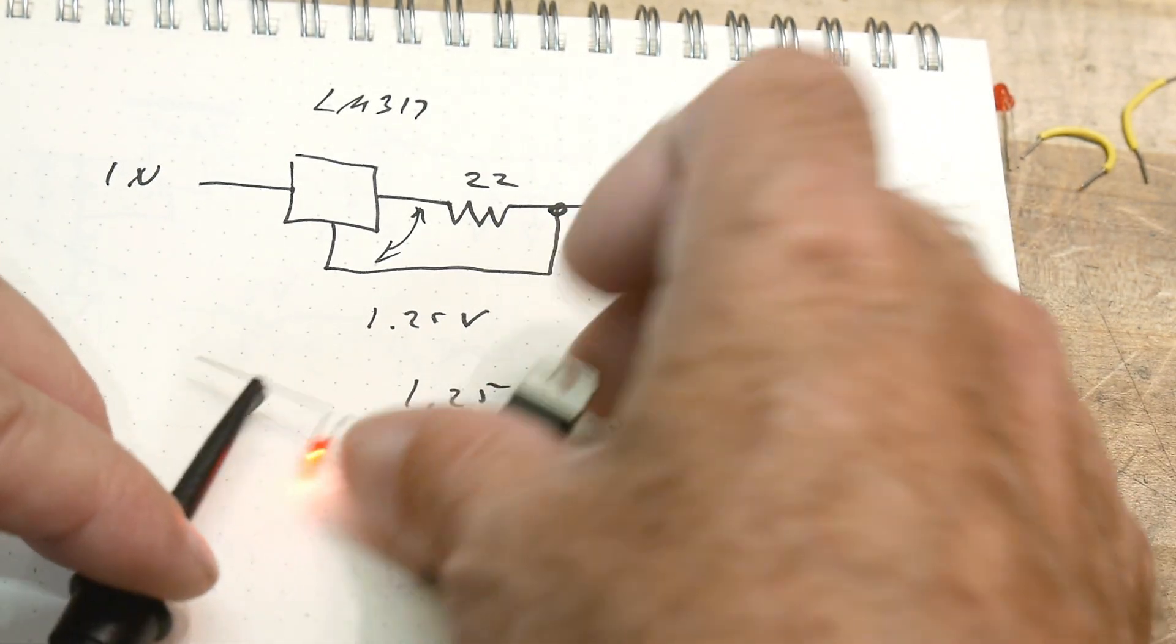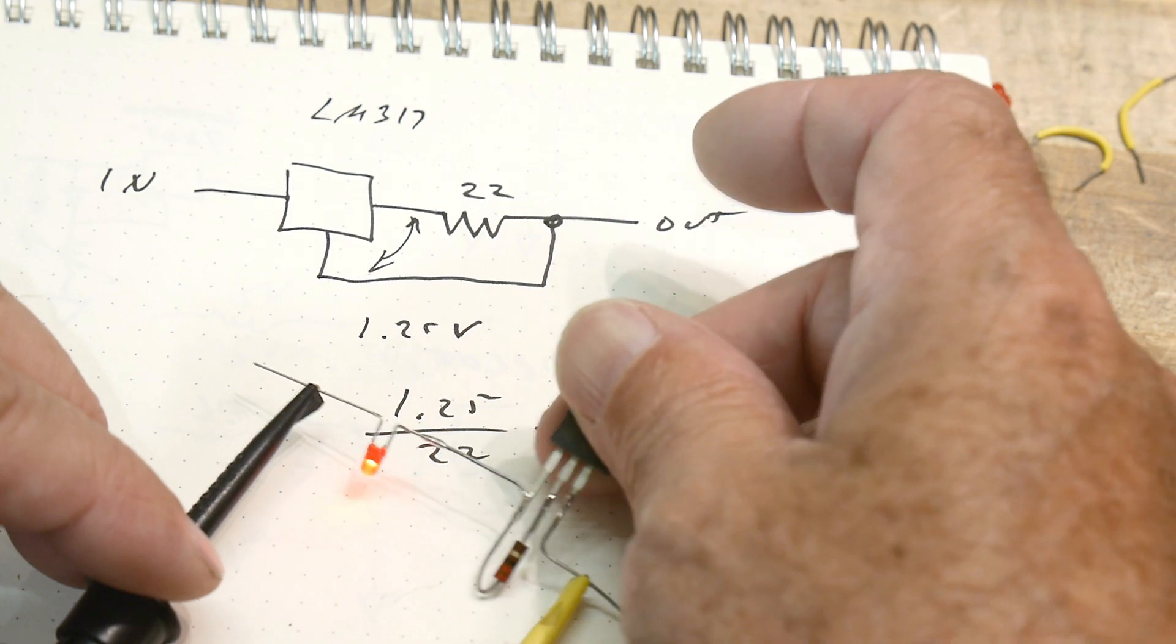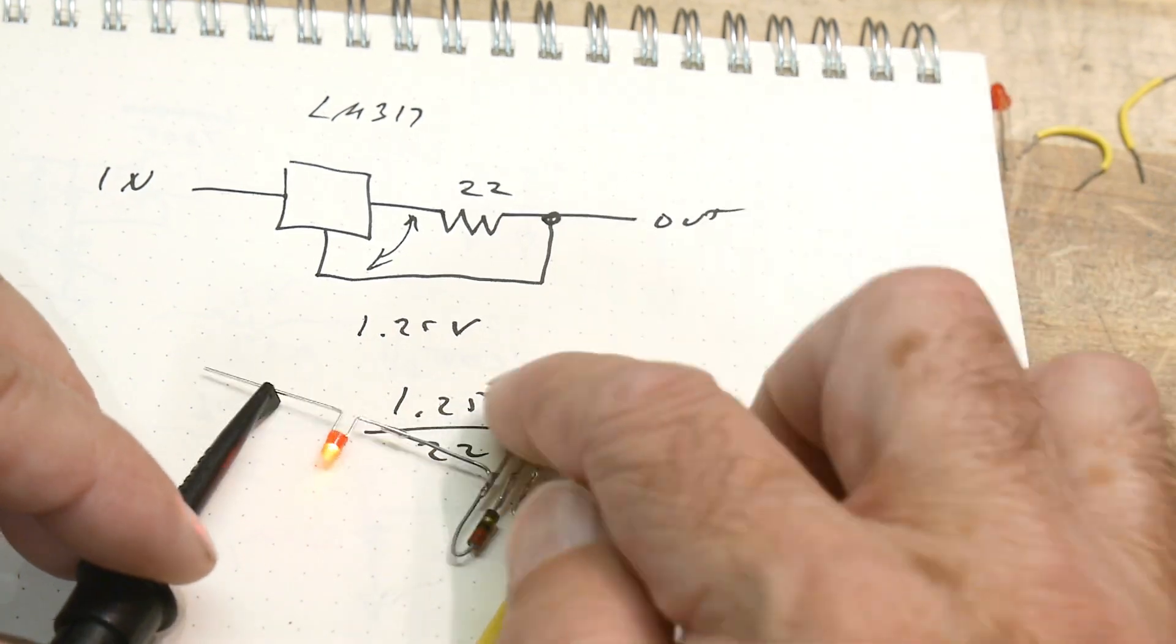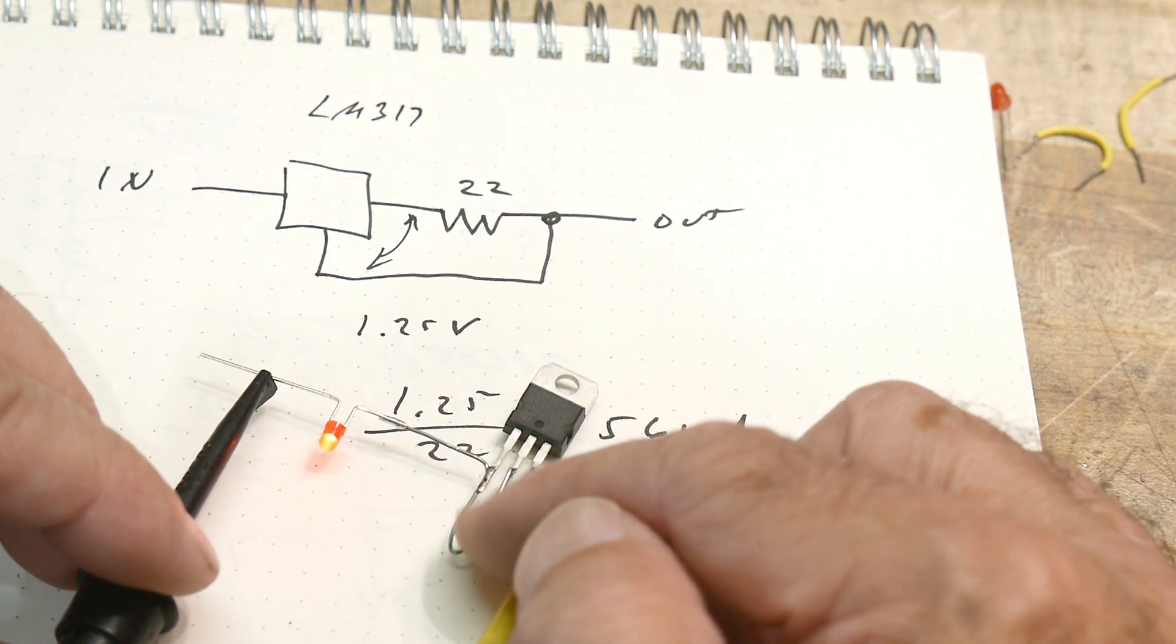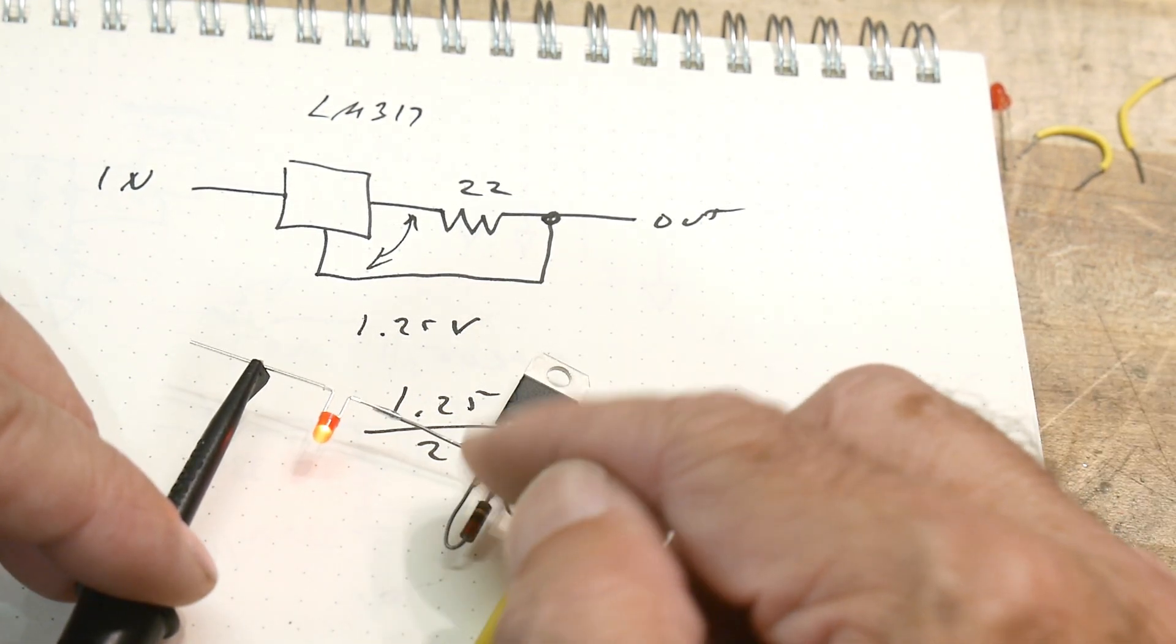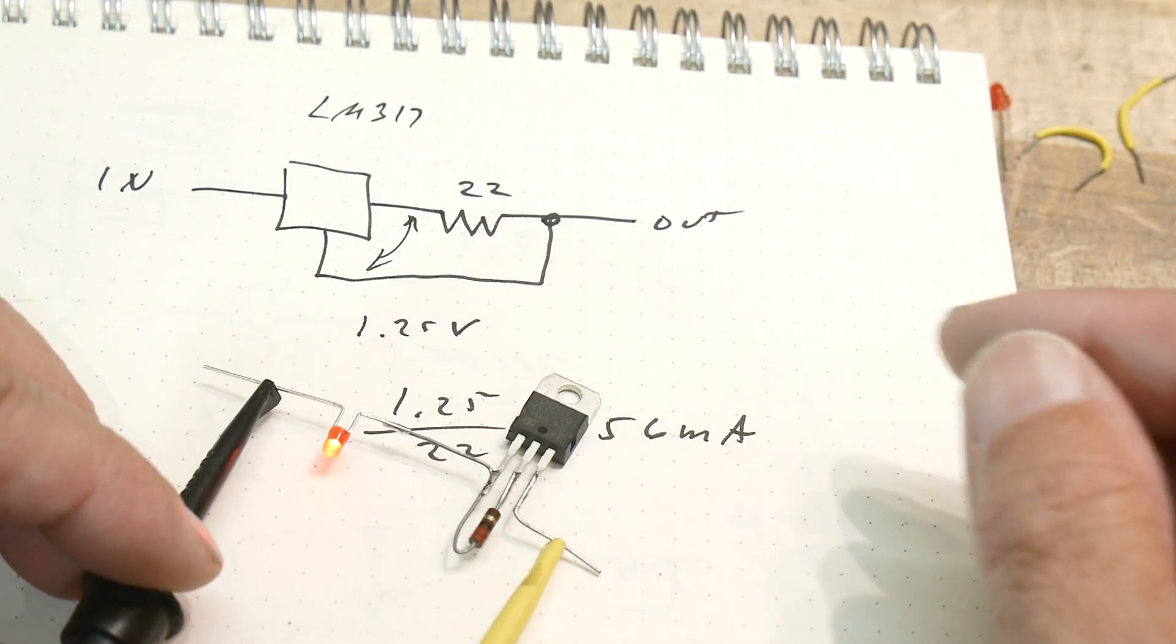If you're going to drive higher currents, then make sure you put your regulator on a heat sink and make sure that you calculate how many watts of a resistor you need, right? This is just a quarter watt resistor. You might need a half watt. You might need a one watt resistor depending on how much current goes to this thing.